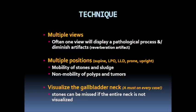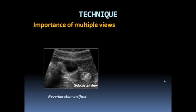It's important to position the patient in multiple positions, including supine, left lateral decubitus, left posterior oblique, and upright, because positioning allows us to determine mobility of stones and sludge, and non-mobility of polyps and tumors. While we must evaluate the entire gallbladder, it's especially important to evaluate the neck in every case, because stones can be missed if the entire neck is not visualized.